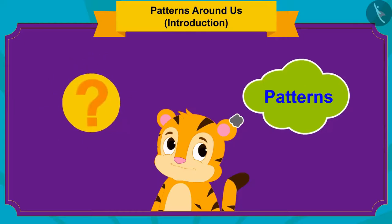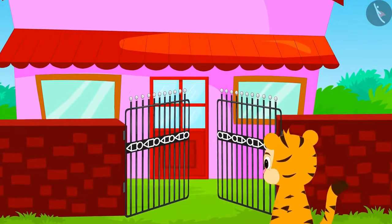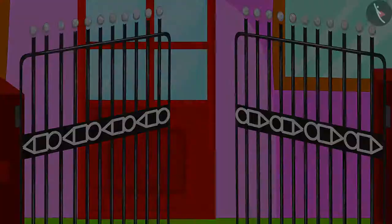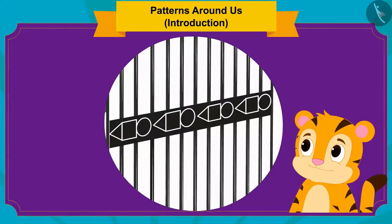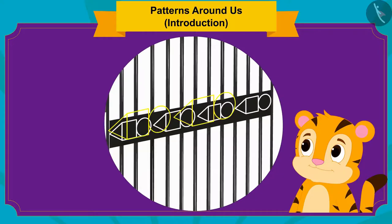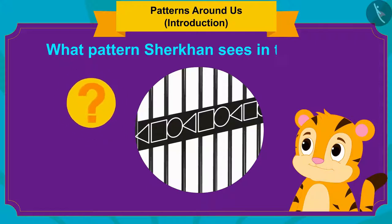Let's see what other patterns Sher Khan saw. There is a beautiful gate outside the shop from which Sher Khan went to buy cake. Sher Khan started thinking: oh wow, how beautiful is this gate! How many different shapes are made in it? Then Sher Khan looked at the gate more closely and thought, there is a pattern in this too. Children, can you tell what pattern Sher Khan sees in this gate?